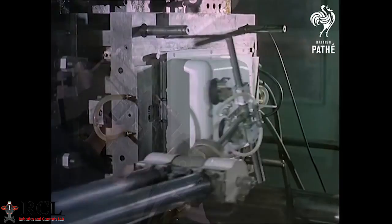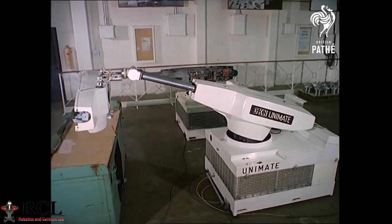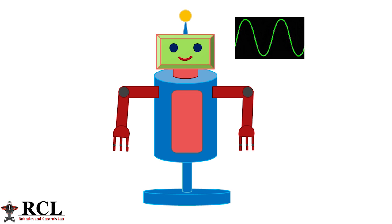A magnetic drum is used to store the instructions which will be implemented in a step-by-step process. Since then, we have come a long way. But how is this possible? A robot observes, decides, and acts.